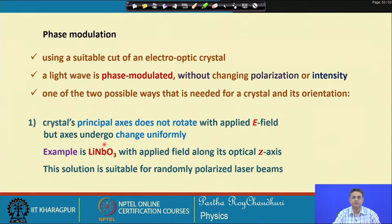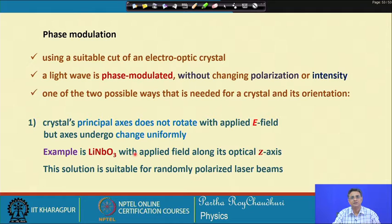The example we discuss is lithium niobate: when you apply an electric field along the optical z axis of the crystal, the index ellipsoid does not rotate, but the lengths of all three semi-axes increase uniformly. This results in the principal refractive indices changing only in magnitude, not direction. So if you apply a modulating voltage, delta-n_x or delta-n_y alone will change with the modulating voltage and the output light will be phase modulated.